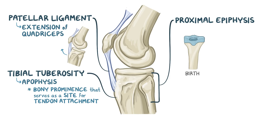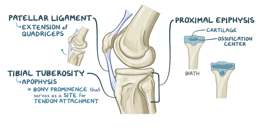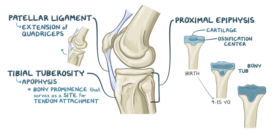At birth, the proximal epiphysis consists of cartilage, but it contains an ossification center inside. This ossification center starts to ossify, or turn to bone, between the age of 9 and 15, and becomes a bony tuberosity around the age of 18.